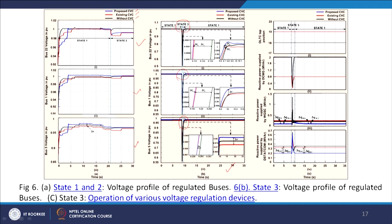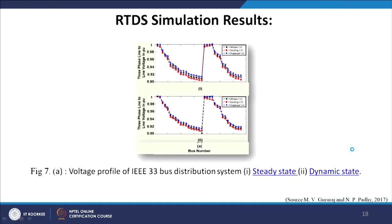During state 3 (transient state), the operation of voltages at regulated buses is plotted. The device positions shown are: OLTC, DC microgrid, wind generator, and DSTATCOM. RTDS simulation results show the voltage profile of all 33 buses plotted for both steady state and dynamic state conditions.